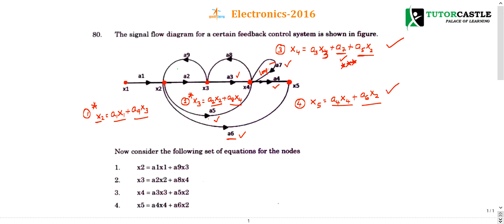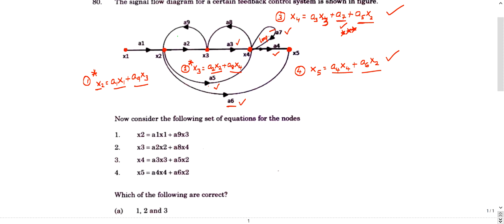Now consider the following set of nodes. x2 = a1x1 + a9x3, that is exactly correct. x3 = a2x2 + a8x4, that is exactly correct. x4 = a3x3 + a5x2, but there's also plus a7 that is missed, so this is incorrect.